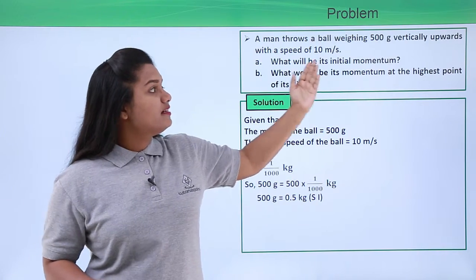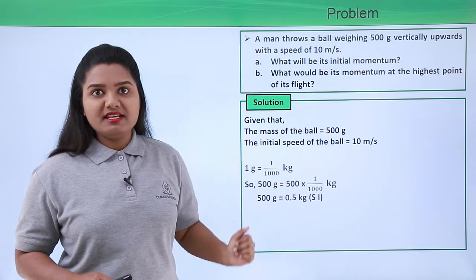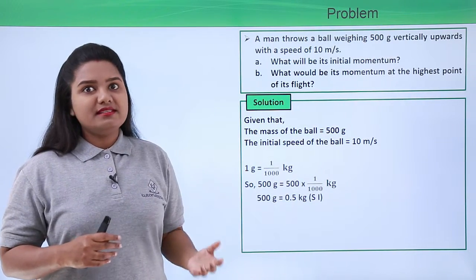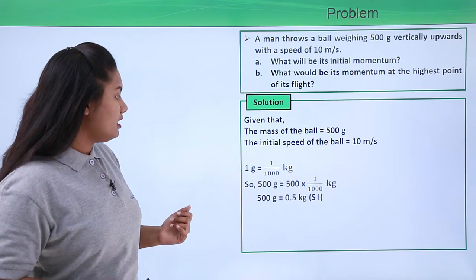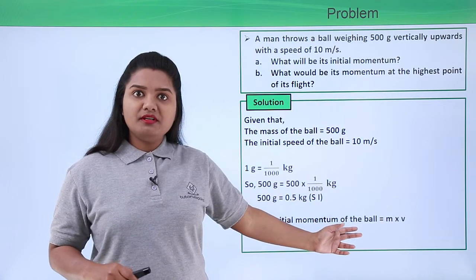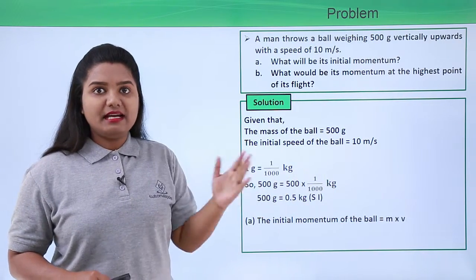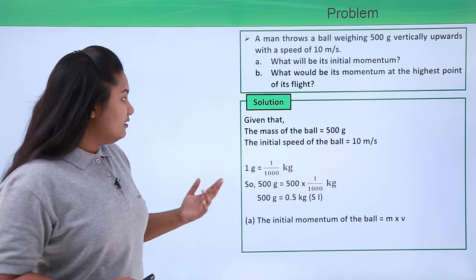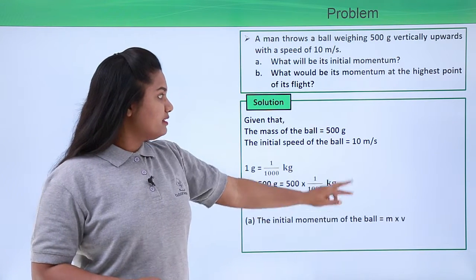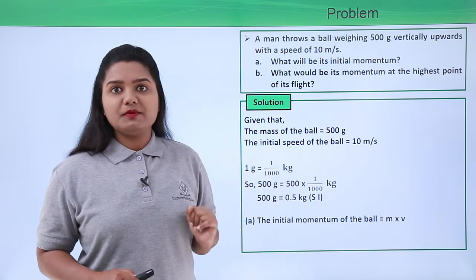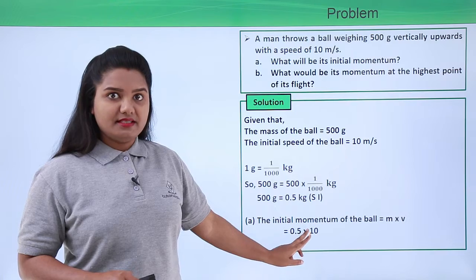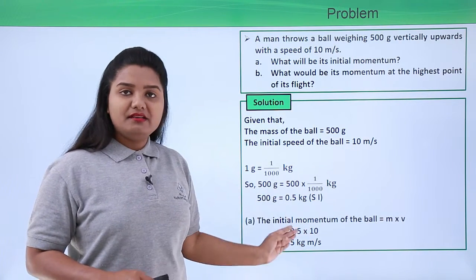So the first thing that we need to calculate here is the initial momentum of the body, the momentum that the ball possesses when it was thrown from the ground. Now we know that the initial momentum of the ball is given by the formula which is mass into velocity of that ball at that particular instant. So here the mass is given to us which is 0.5 kg after conversion to SI and the velocity we already have which is 10 meters per second. Now when we put these values here we get 0.5 multiplied by 10 which is 5 kg meters per second.